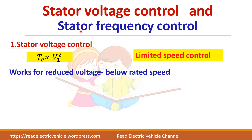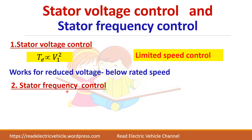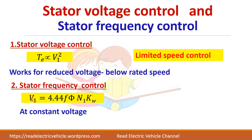The second control technique is stator frequency control. Here the voltage will be kept constant and the frequency of the stator supply will be changed to control the speed. The voltage equation is 4.44 × F × φ × N1 × Kw. Here F and φ are variables. If voltage is kept constant and I change the frequency, flux will also change so that voltage remains constant.